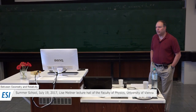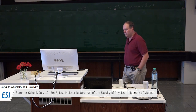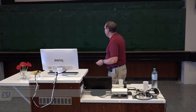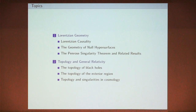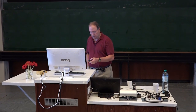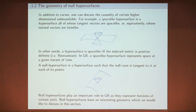We're going to continue our session on topology and general relativity. Here's our outline again. There are two parts: the first part deals with Lorentzian geometry, which we'll continue today, and tomorrow we'll reach the second part — in some sense the main part — on topology and general relativity. We're going to start today by talking about the geometry of null hypersurfaces.